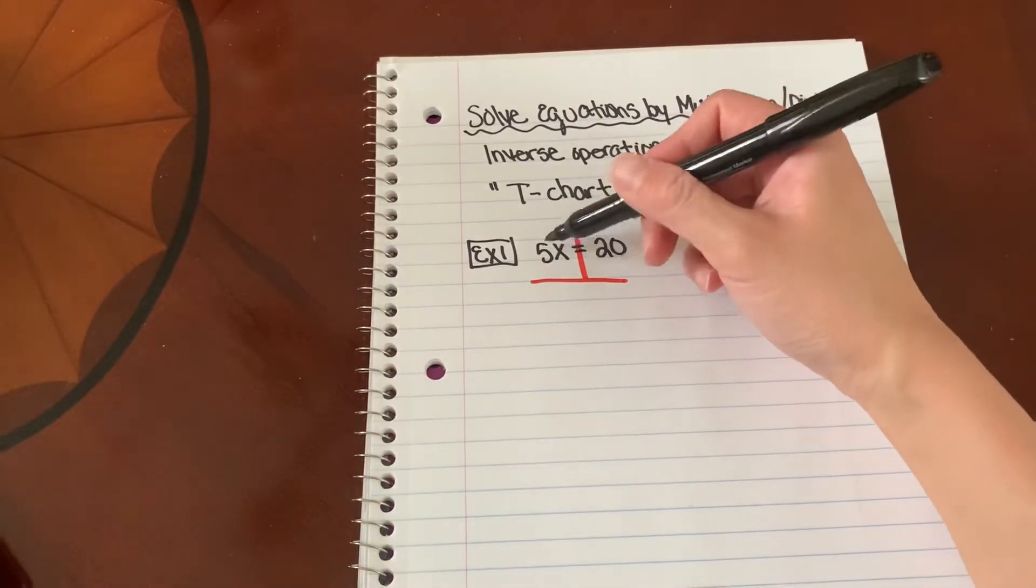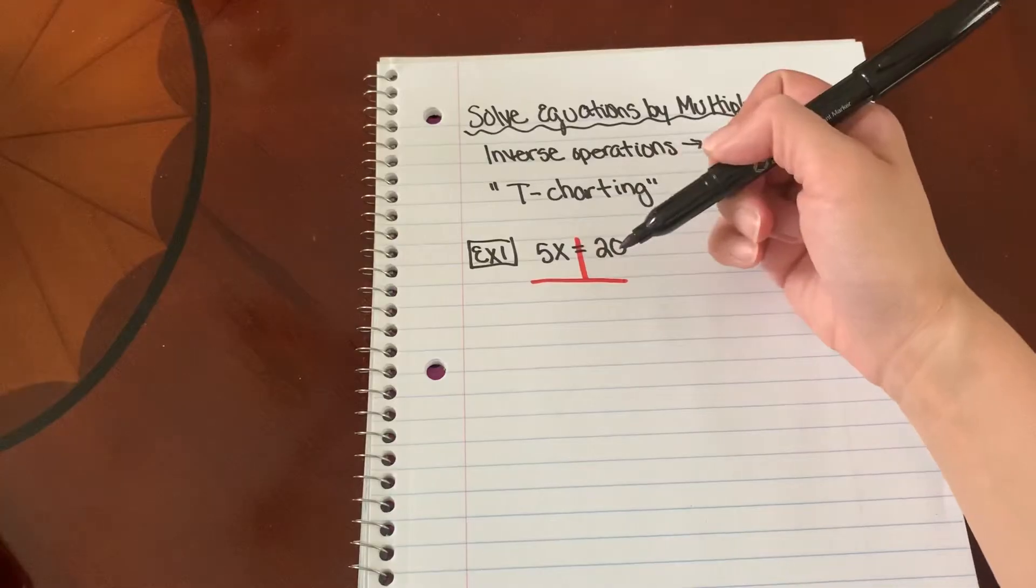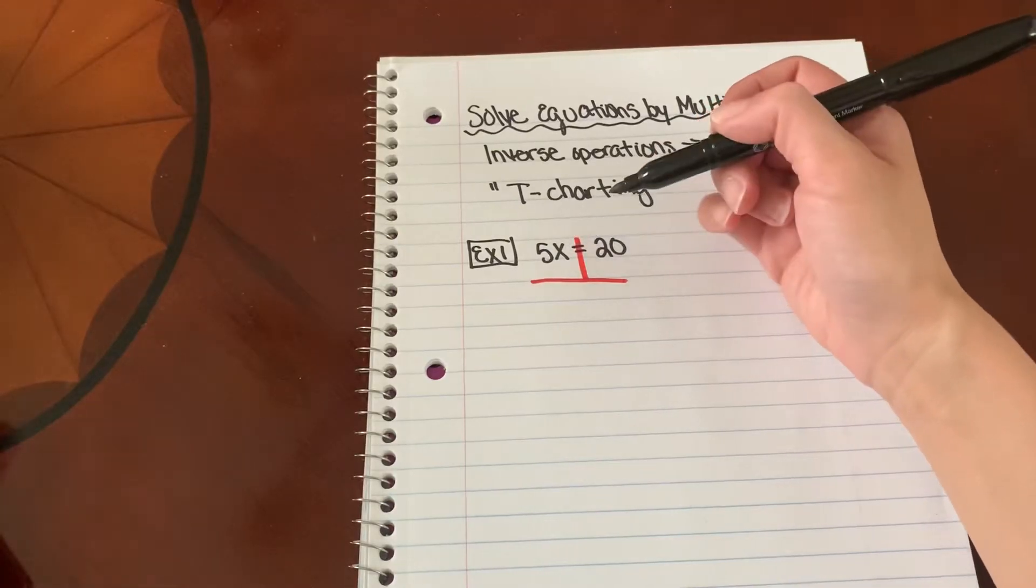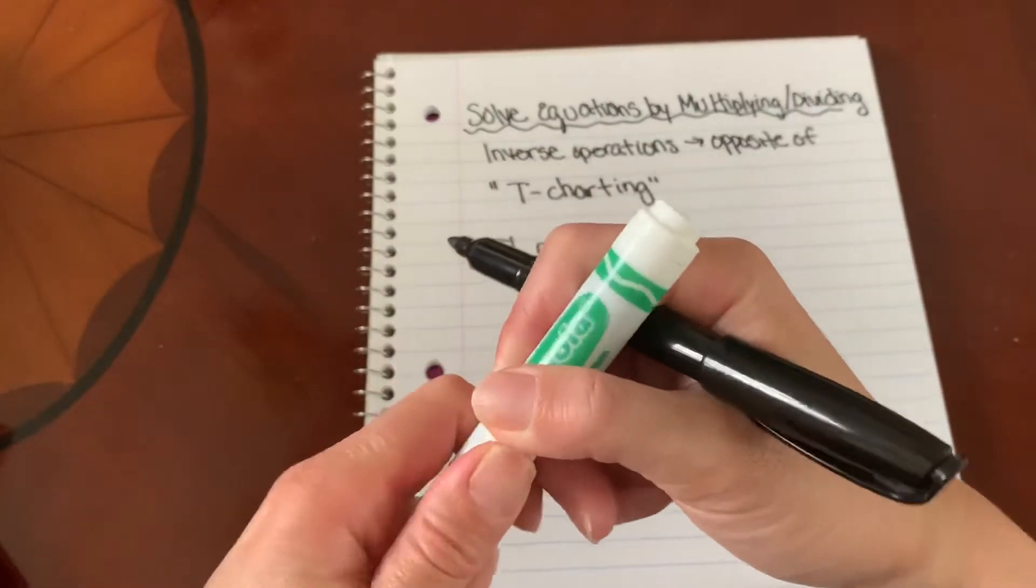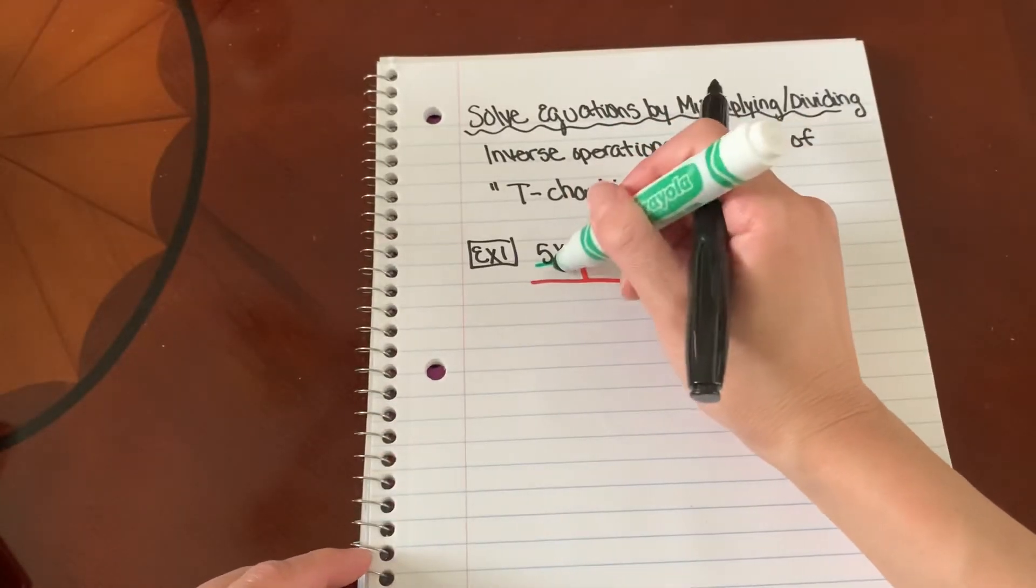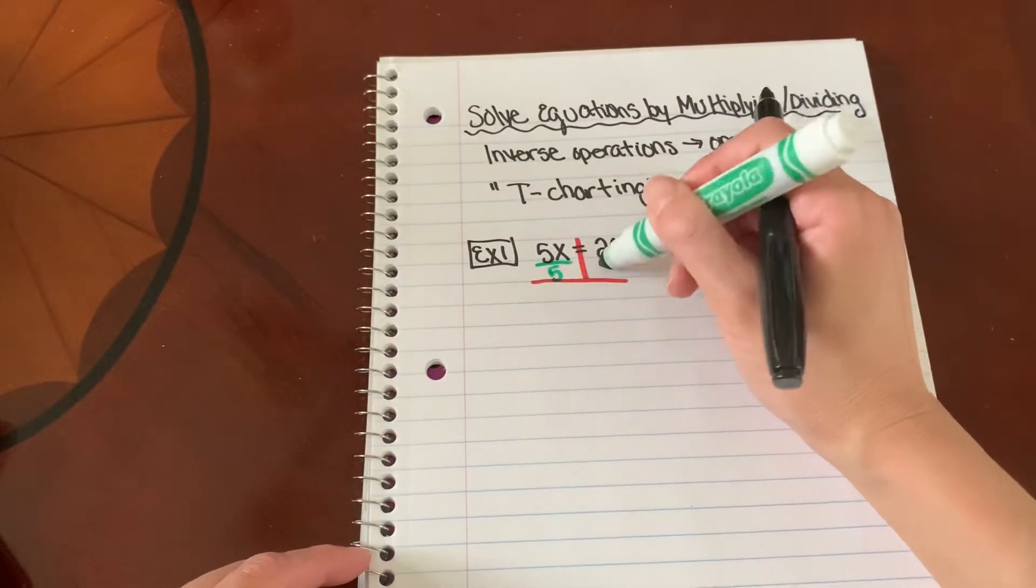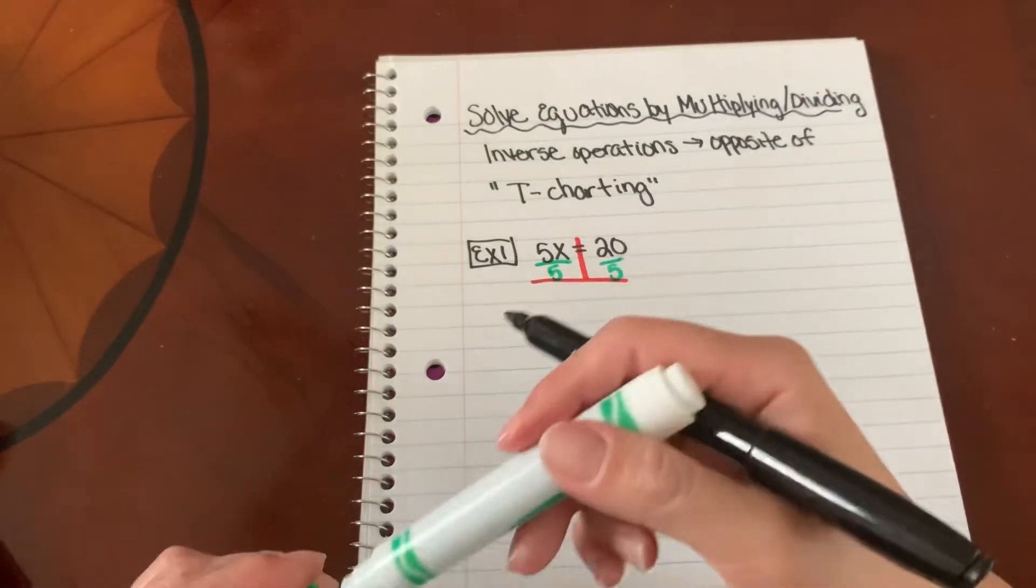Now, since the 5 and the variable x are being multiplied by each other, what is the inverse of multiplication? Well, that is going to be division. So I'm going to divide both sides by 5.